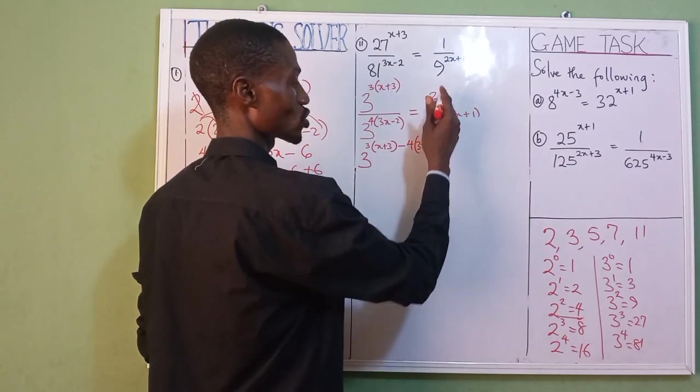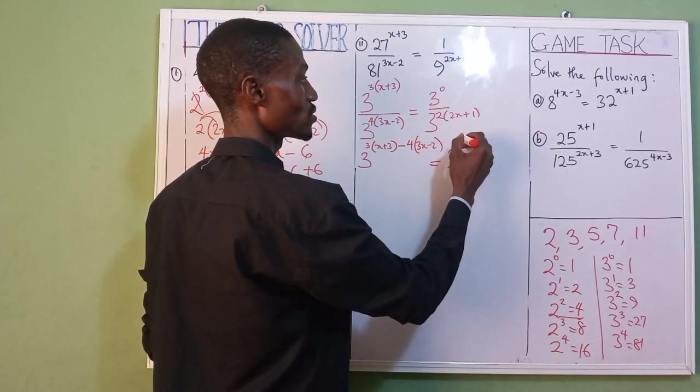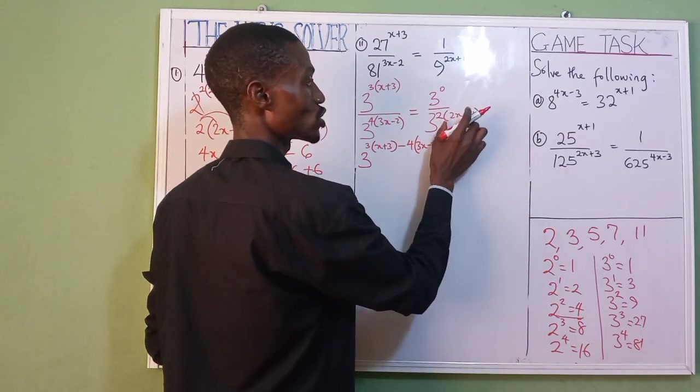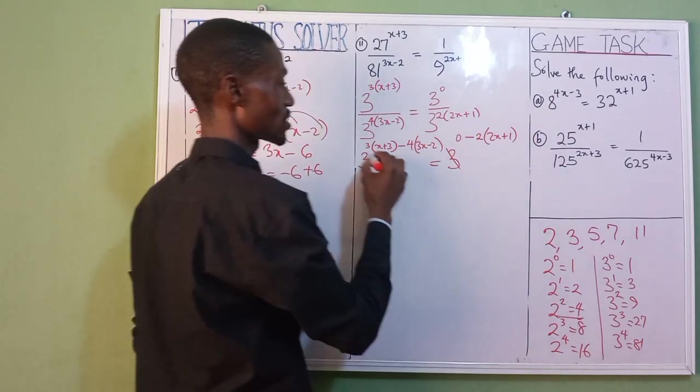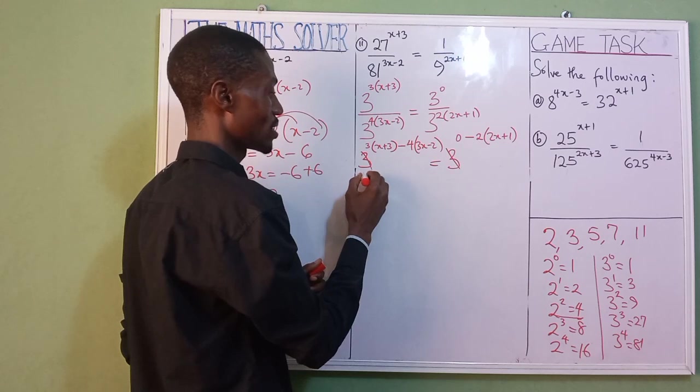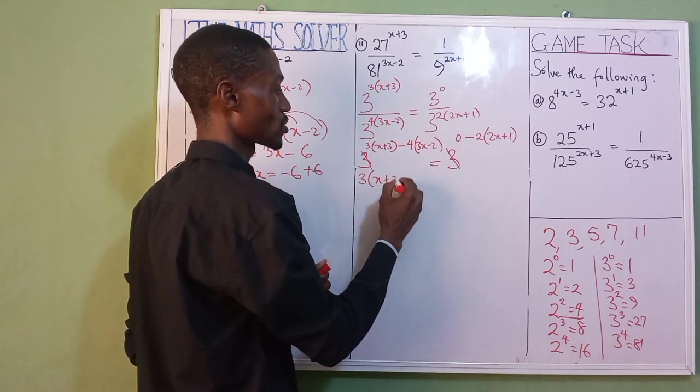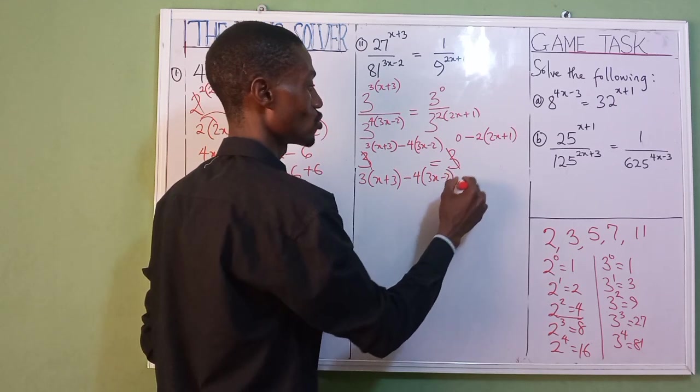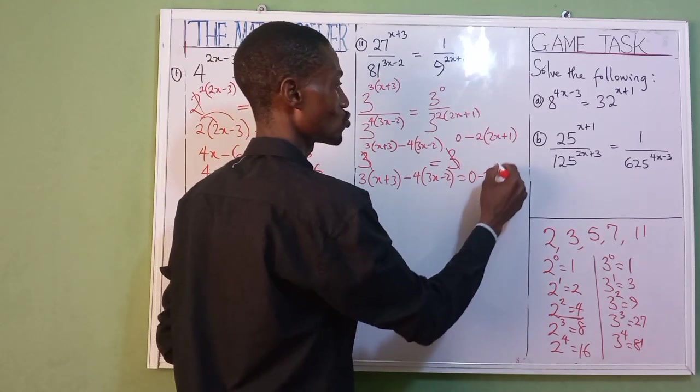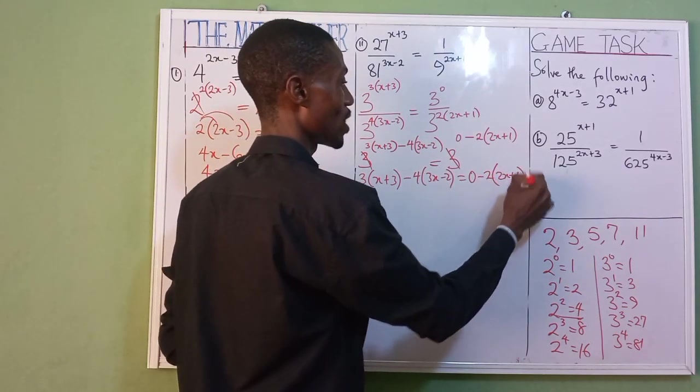Up here, we already have 3 to the power of (3x plus 3). This one is now coming up. You are supposed to minus 4(3x minus 2). We don't need this 3 down here again. Now, equals, let's come to the second one, 3 to the power of 0 minus, because this one is also coming up, 2 into brackets (2x plus 1).